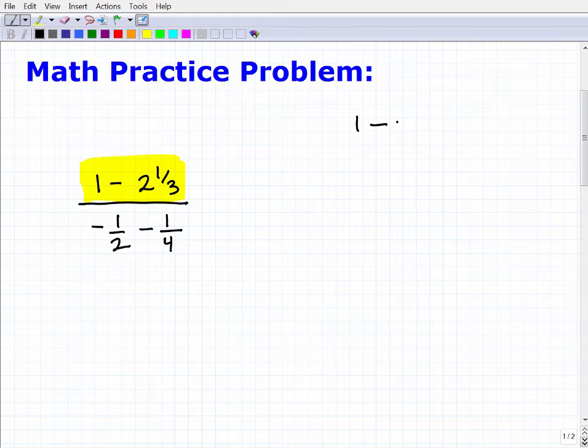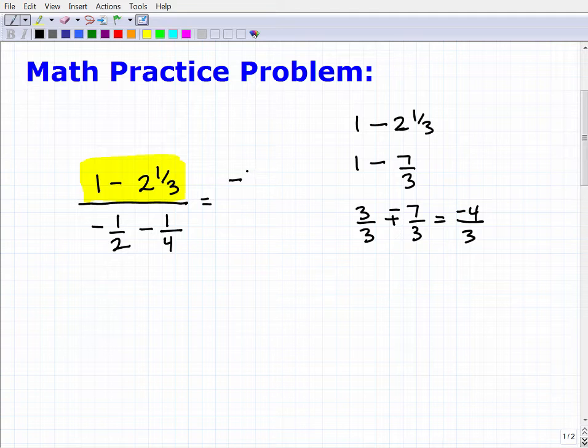With that being said, let's go ahead and do this real quick. I have 1 minus 2 and 1 thirds. So the way we could do this, we're going to change this mixed number into an improper fraction. So I got 1 minus, 3 times 2 is 6, 6 plus 1 is 7, right? So that's 7 thirds. So 1 minus 7 thirds, 1 is the same thing as 3 over 3 minus 7 thirds. So now I have what? This is going to be negative 4 thirds. So our numerator up here is negative 4 thirds.